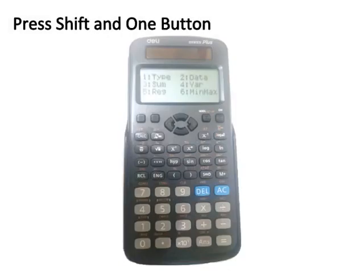Press Shift then button 1 to see a new screen. In this screen: 1 is for Type, 2 is for Data Entry, 3 is for Sum, 4 is for Variance, 5 is for Regression, and 6 is for minimum and maximum values. Important tip: do not press buttons 1 or 2 — we have already specified the type and completed data entry. Just press 3, 4, 5, and 6 to get all measures one by one.